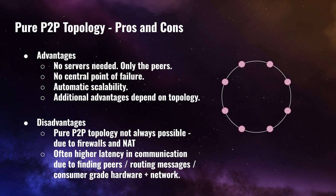However, in recent years, consumer-grade hardware has actually become quite powerful. Many PCs and laptops have powerful CPUs and graphics cards, and a lot of people have fiber networks at home. So there can actually be a lot of computing power and network bandwidth available from consumer-grade hardware. This is also why I think it is now really interesting to revisit peer-to-peer topologies as a possible solution for many consumer-grade compute problems.